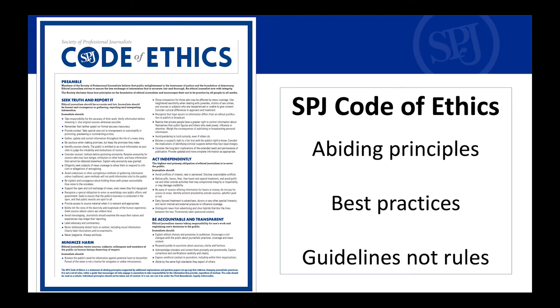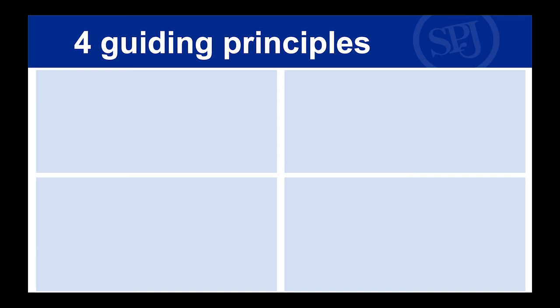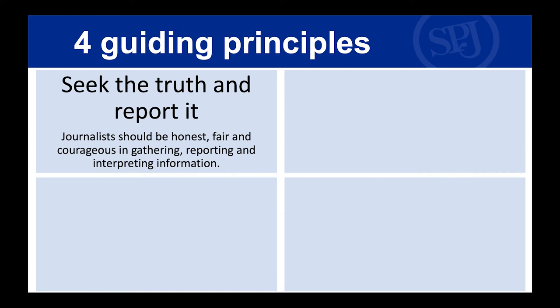How do we know these things? There are so many guidelines for us to follow. The SPJ code of ethics is the basis of many codes of ethics in our profession. Media outlets may adopt their own code, or adopt the SPJ code of ethics. The code of ethics is an abiding set of principles — best practices and guidelines, not rules. They help us make good decisions. There are four guiding principles with many details underneath each one.